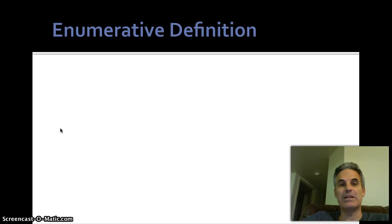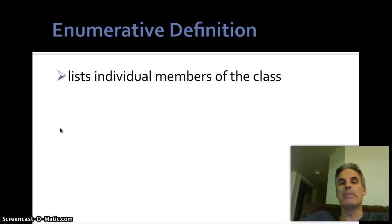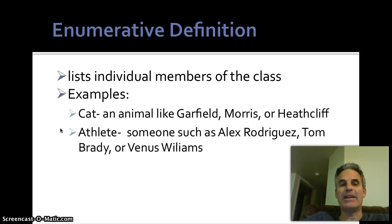The next type of definition is enumerative. With enumerative, you're listing individual members of the class. You're not showing them, you're listing them. So a cat is an animal like Garfield, or Morris, or Heathcliff, right? Individual cats. An athlete is someone such as Alex Rodriguez, Tom Brady, or Venus Williams. Again, individual athletes.